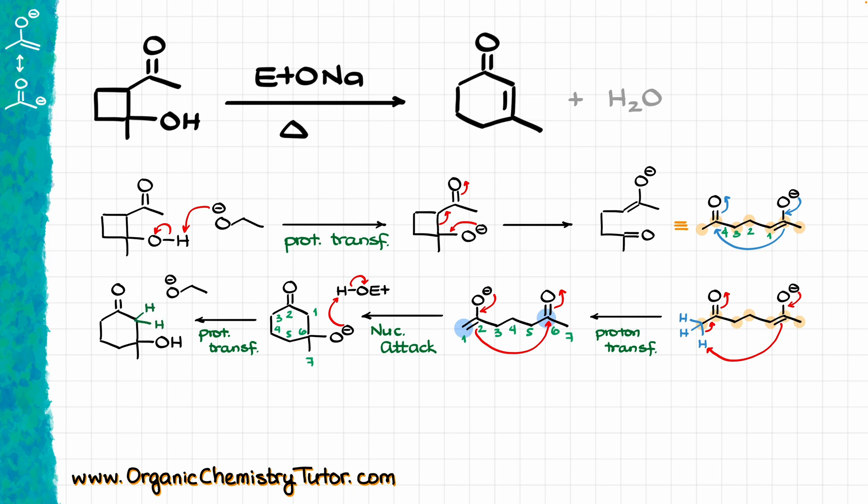Then, from this point, we are going to re-enolize our molecule by pulling one of these protons off from the alpha position, making the corresponding enolate, and the only thing that is left for us is to kick our leaving group out, giving us our final product. Easy peasy.